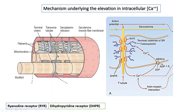When no more action potentials arrive at the T-tubules, the calcium that was released from the sarcoplasmic reticulum into the cytosol will be pumped back into the sarcoplasmic reticulum. This is important because if the calcium ion concentration remains high in the cytosol, there will be continuous contraction and no effect of a new action potential. The calcium is pumped back through the sarcoplasmic/endoplasmic reticulum calcium ATPase — SERCA — a calcium pump that uses ATP as the energy source.